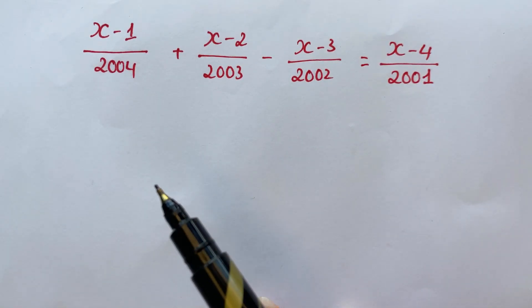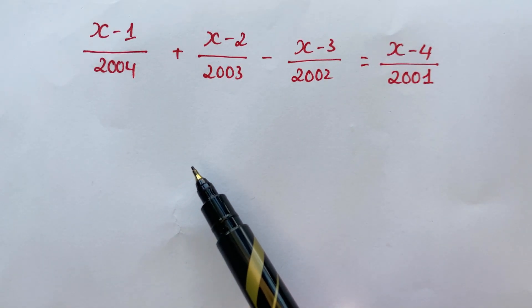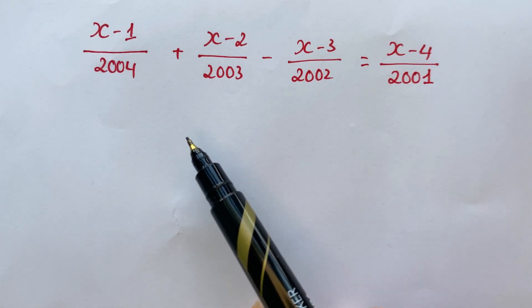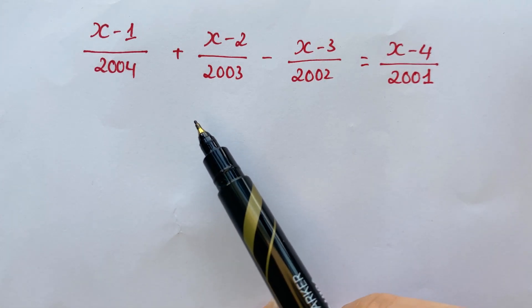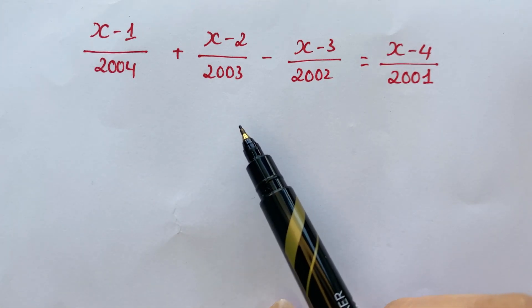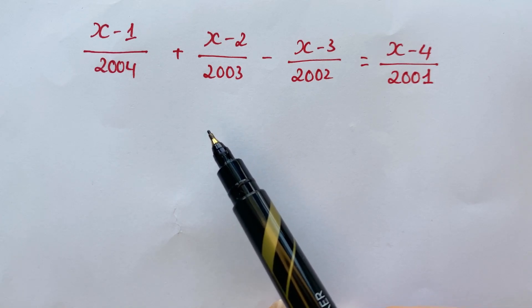Hello, how to find the value of x in this equation? For this equation, if you can find the same denominator, it's quite complicated, right?